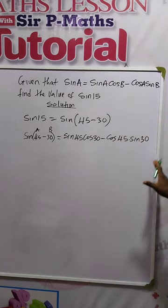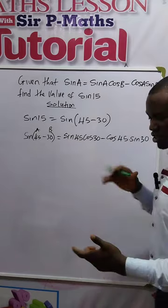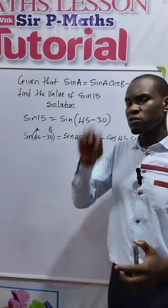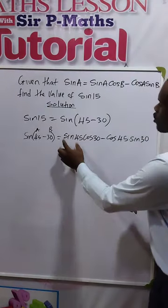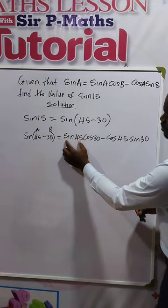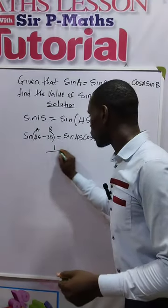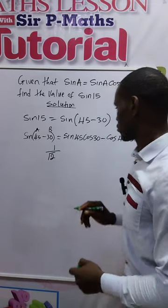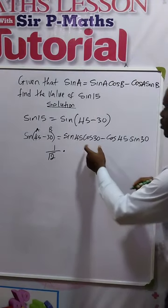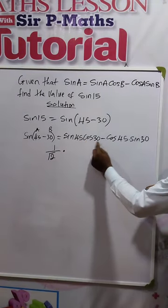So I've distributed 45 and 30 to A and B in this expression. So the next thing we do is to simplify. We are going to be adopting the trigonometric identities of the special angles, right? So here we have sin 45. What is the trigonometric identity of sin 45? That is 1 over square root of 2 times, what is trigonometric identity of cos 30?